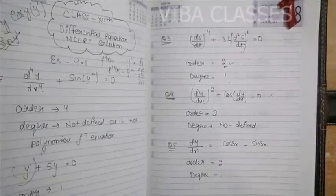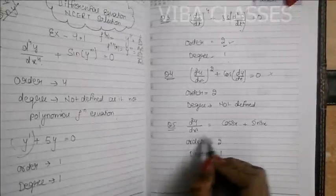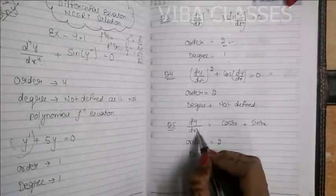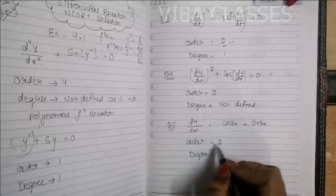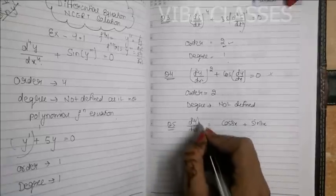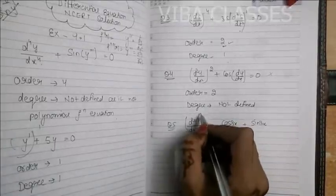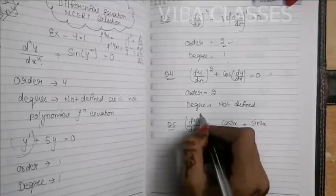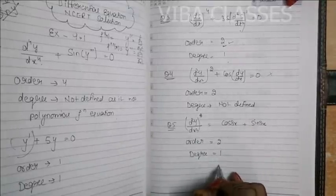Next — that is also a polynomial function. The second derivative has been taken, so the order is 2. The degree is the power of that highest order derivative. If its power is 4, then the degree is 4.